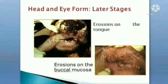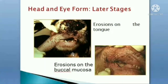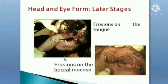In the later stage of the head and eye form, erosions of the tongue and buccal mucosa can also occur. Similar to FMD, but the erosions are specifically on the dorsum of the tongue — in FMD, erosions are not restricted to the dorsum of the tongue.